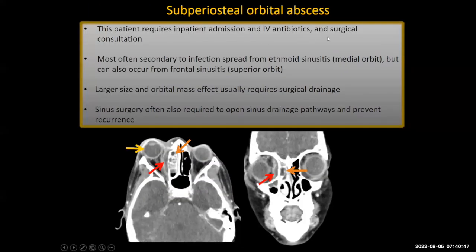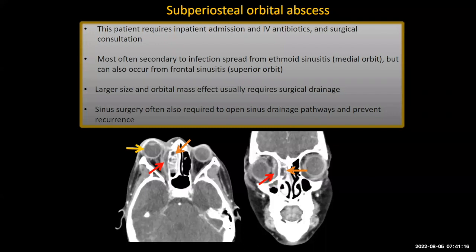This patient requires inpatient admission, IV antibiotics, and a surgical consultation. These subperiosteal abscesses are most often secondary to infection spread from the ethmoid air cells, involving the medial orbit. You can also get infections from the frontal sinus wrapping along the roof of the orbit. The larger the abscess and if there's orbital mass effect, surgical drainage is usually required. Sinus surgery is often also required to open up sinus drainage pathways and prevent recurrence, since this is really an issue in the sinus that spilled over into the orbit.